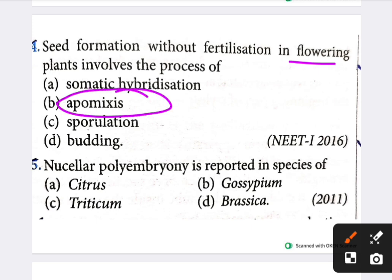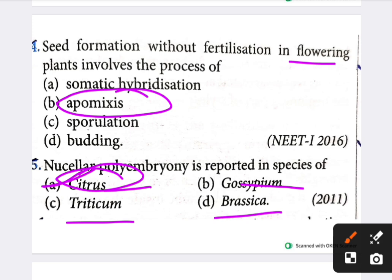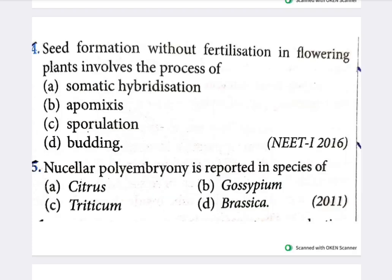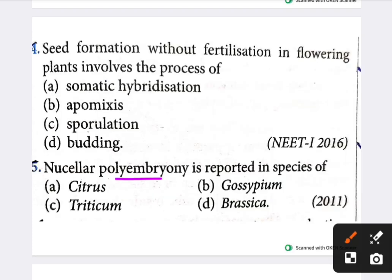Next question: nucellar polyembryony is reported in species of which plant? Options include Citrus, Triticum, and Brassica. The answer is Citrus. Nucellar polyembryony is found in many varieties of Citrus and mango.